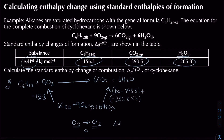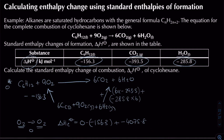The enthalpy change of combustion equals zero, minus minus 156.3, plus the value of 6 times minus 393.5 added to minus 285.8 times 6, which simplifies to minus 4075.8. Rearranging gives the enthalpy change of combustion as minus 3920 kJ/mol. This negative value is expected for a standard enthalpy change of combustion.